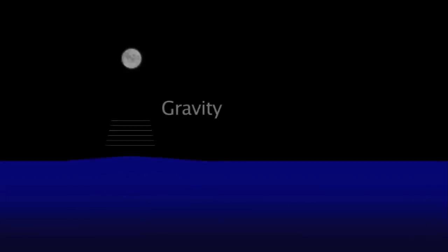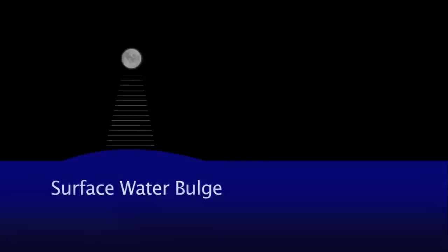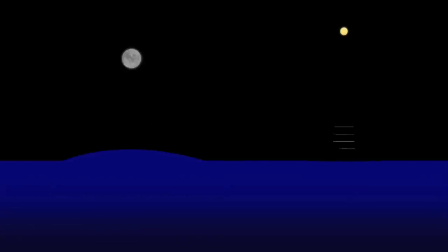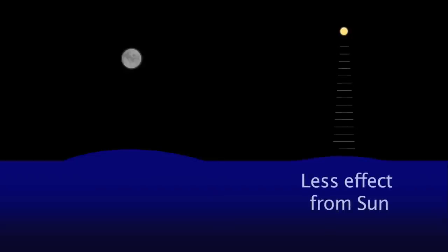As the moon's gravitational force interacts with the water, it causes a bulging effect on the surface of the water and the ocean or gulf. The sun's gravitational force also causes this effect, but it's much less than the moon's.